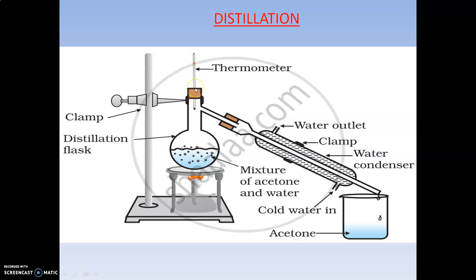You have a thermometer through which you can see the temperature at which the solution starts evaporating. After evaporation starts, a delivery tube connects to a condenser outside. This condenser is generally known as a Liebig condenser, discovered by the chemist Liebig. Through the Liebig condenser, the evaporated vapors get condensed and cooled down, and as a result turn back into liquid form.